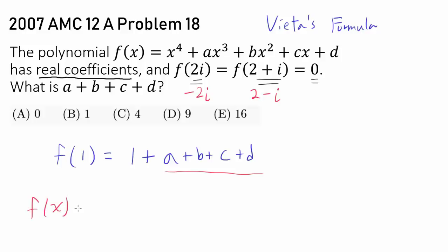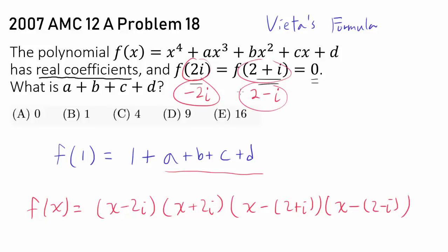We know f(x) can be written as (x minus 2i)(x plus 2i)(x minus (2 plus i))(x minus (2 minus i)). Because we know 2i, negative 2i, 2 plus i, and 2 minus i are zeros, so f can be factored in this form. And since the leading coefficient is 1, we don't need to put anything except 1 at the front. Now finding f(1) is very easy.